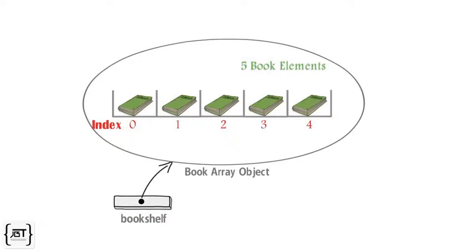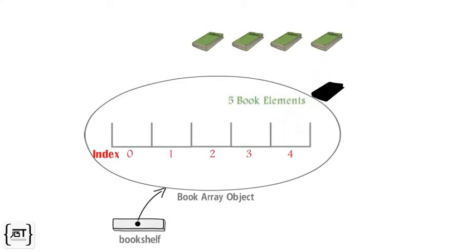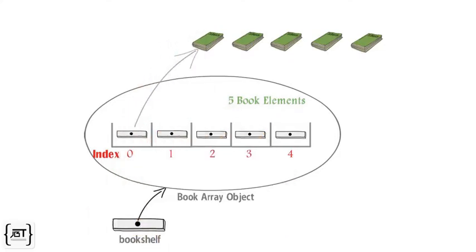But there is a slight difference with the way a bookshelf holds books. Here, the elements of the array do not actually contain a book object. The book object is created somewhere in memory and there will be a reference variable to access it. The array will actually hold the reference variables to the book objects.